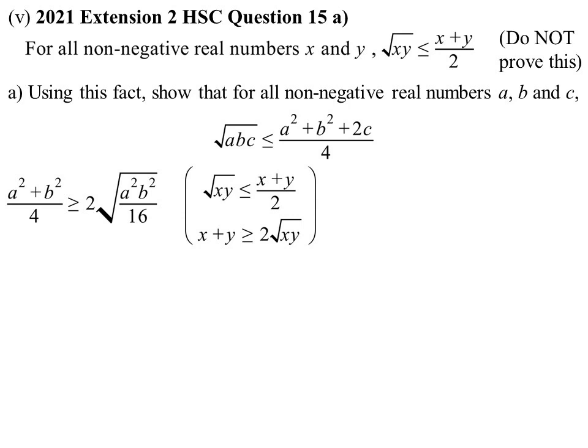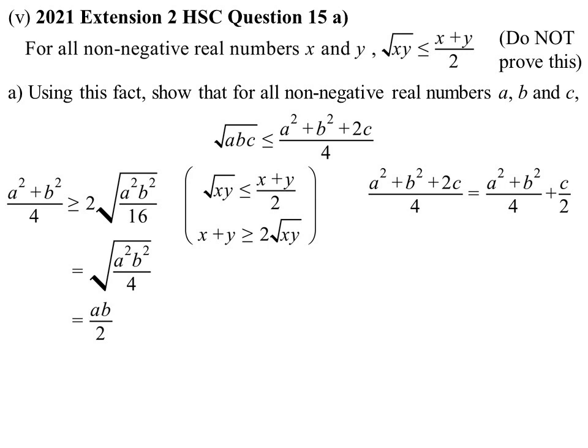After establishing A²/4 plus B²/4 ≥ AB/2, the full fraction (A² plus B² plus 2C)/4 equals (A²+B²)/4 plus C/2. That is ≥ AB/2 plus C/2. Now AB/2 plus C/2 is two things added together, which by AM-GM is ≥ 2√(AB/2 · C/2) = 2√(ABC/4) = √(ABC). So √(ABC) ≤ (A² plus B² plus 2C)/4 — the required result.